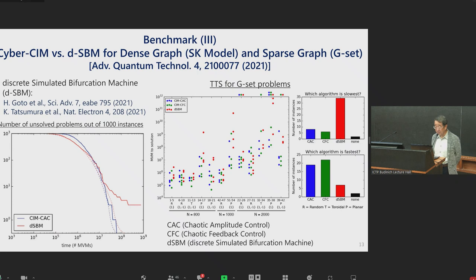The right panel shows time to solution for sparse graph, the so-called G-set problem, from program size 800 to 2000. As you can see in the histogram of the right-most two panels, the discrete simulated bifurcation machine actually shows the slowest speed. The chaotic feedback control, which is similar to what previously described, the chaotic amplitude control, is actually fastest among the solved problems. The three machines are tested here. A few actually are G-set problems, which is shown by black history.